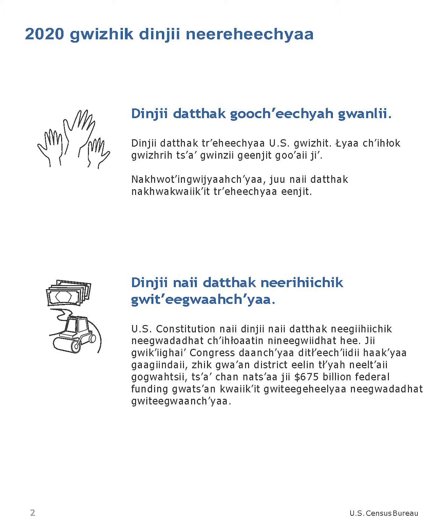The U.S. Constitution requires a Census every 10 years. The number of seats each state has in Congress, draw boundaries for voting districts, and determine how more than $675 billion in federal funding is spent in communities each year.